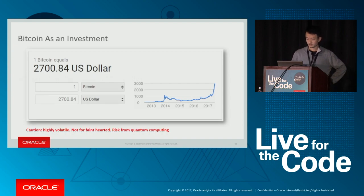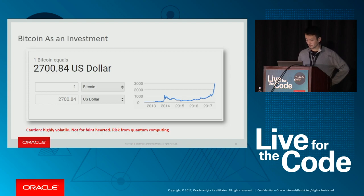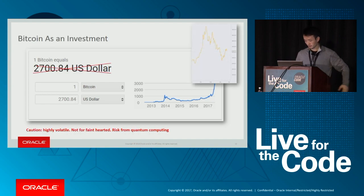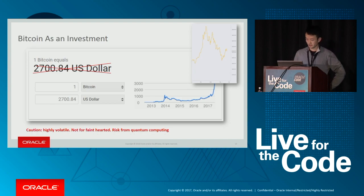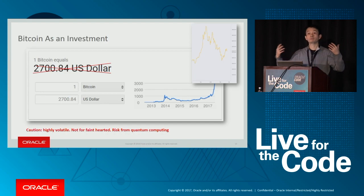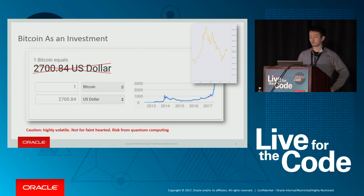There are a lot of uses of Bitcoins. The first is investment — the price has gone up quite a bit. When I gave a talk in July 2017, the price was $2,700 and went close to $20,000 per Bitcoin. Lately it has come down, so there's a lot of fluctuation — it's not for the faint-hearted. Some researchers worry that quantum computing could provide an effective way to solve the puzzle and break the whole system.